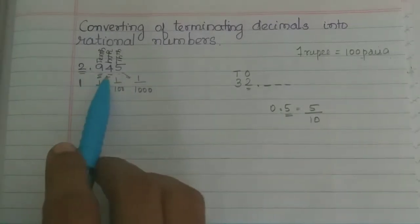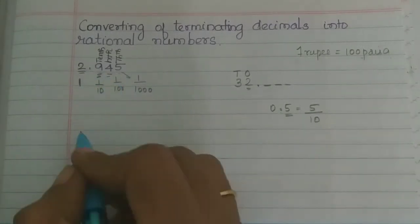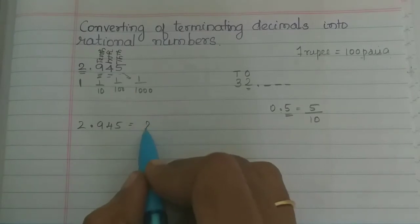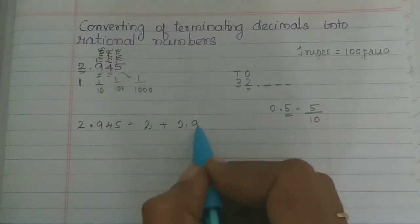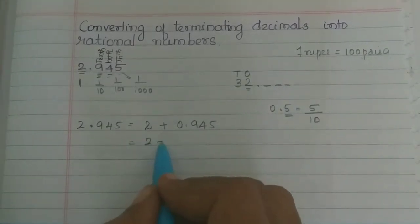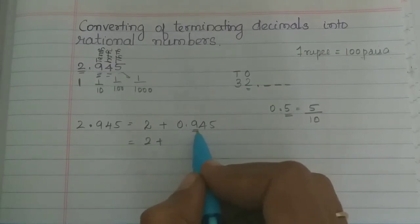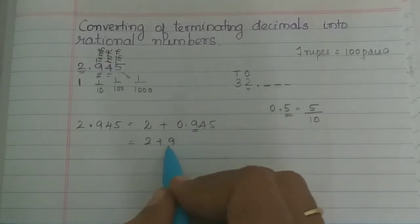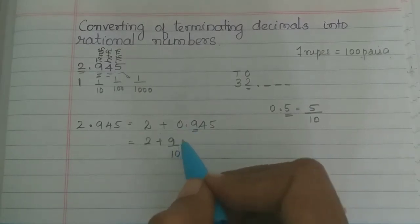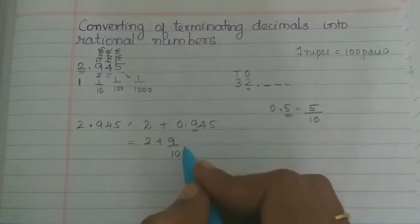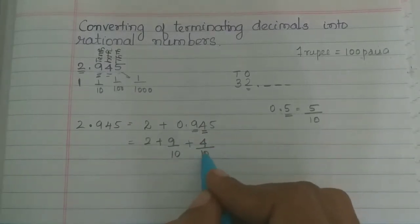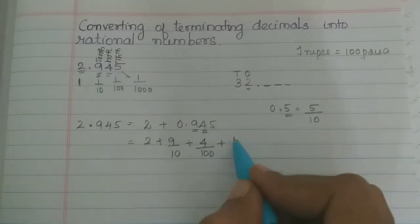So now, how do we see 2.945 as a fraction? There is 2.945. I will write the whole number and the decimals separately. The whole number is 2, plus 0.945. So that is 2 plus 9 by 10, plus 4 by 100 — because 4 is in the hundredths place — plus 5 by 1000, because 5 is in the thousandths place.